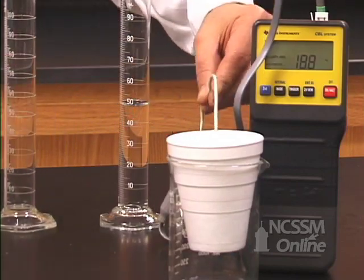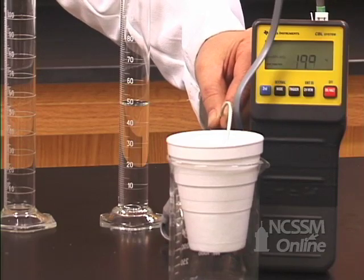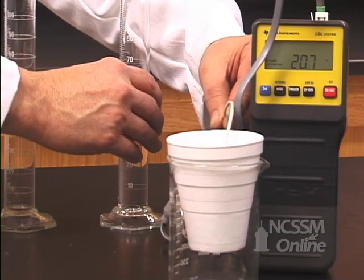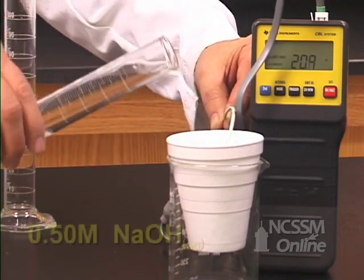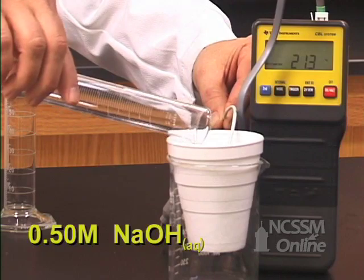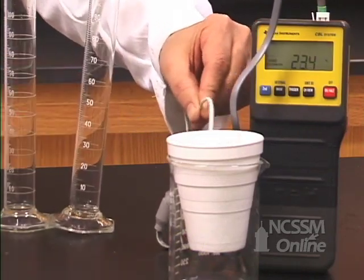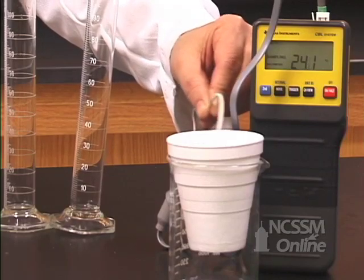We put our temperature probe into the calorimeter and measure the initial temperature of the solution. We add the sodium hydroxide solution and stir the mixture and record the highest temperature reached.